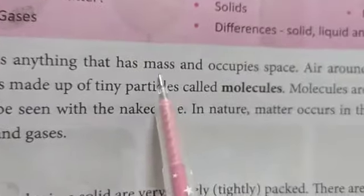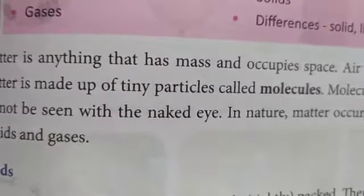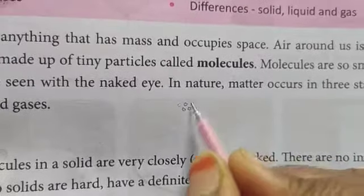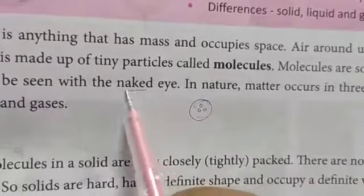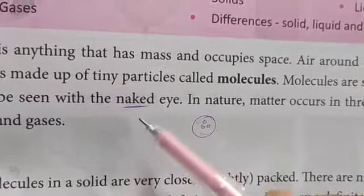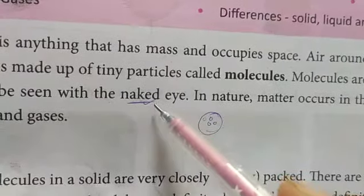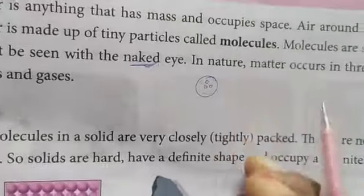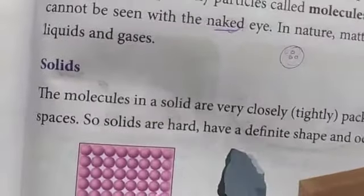The substance which has mass — which has weight — and which can occupy space, that is called matter. How is matter made up? Very small particles called molecules. Molecules together form the matter, and these cannot be seen with our naked eye — only with the help of a microscope. Matter exists in three states: solids, liquids and gases.